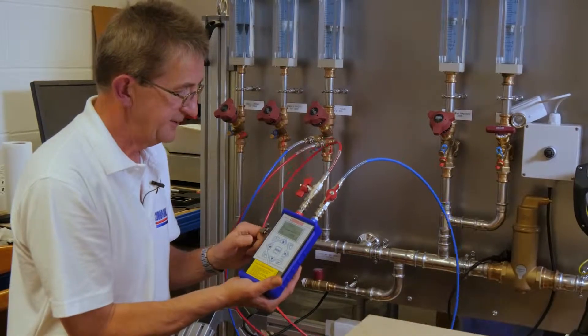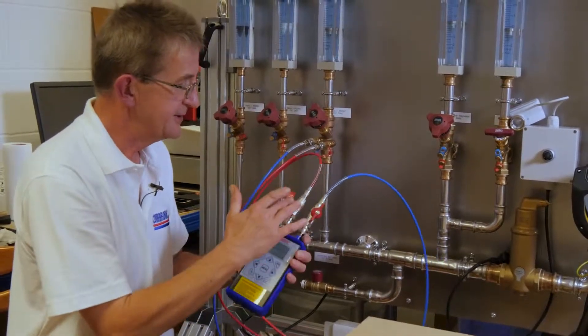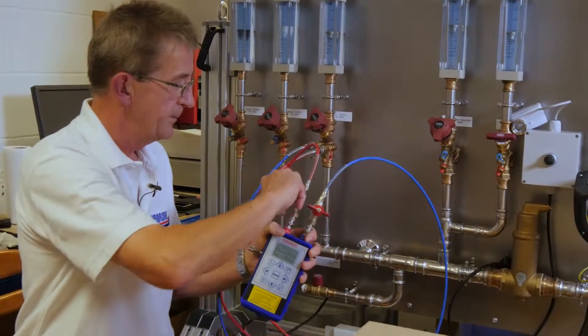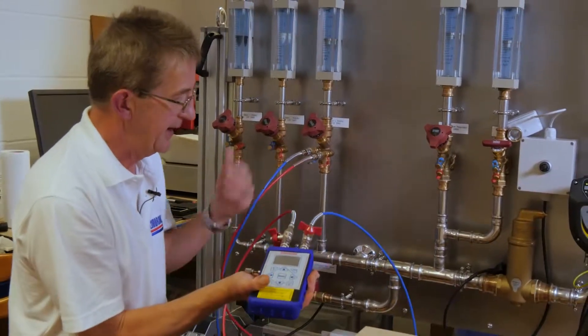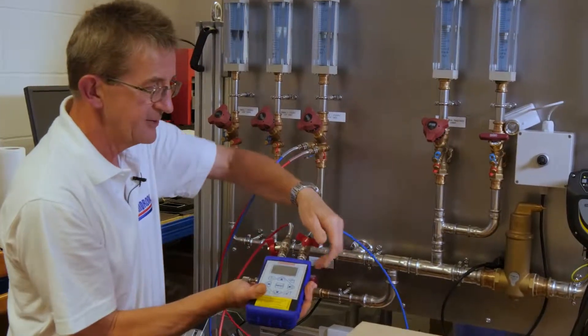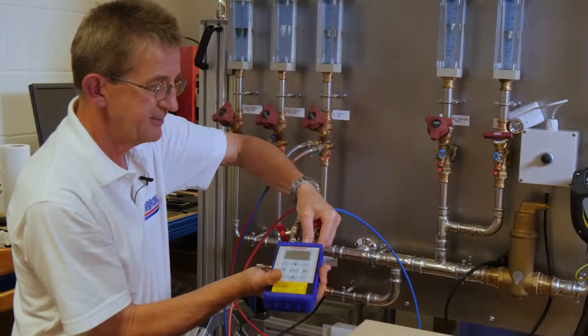So the equalizing valve is open. We can now close the isolating valves on the hoses. And we're going to disconnect the hoses. Now we've had pressurized water in here. So there may be some water that just comes out when we disconnect the hoses. So just be careful.